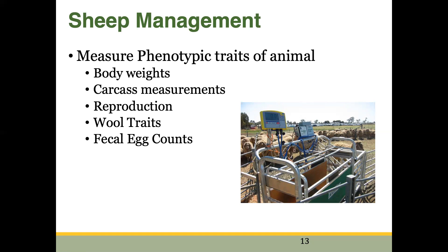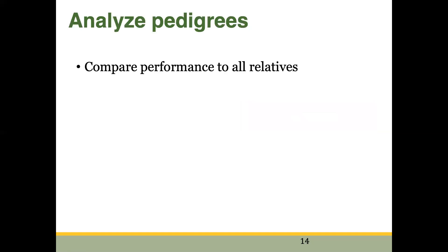It's a fairly simple process on-farm — we're simply measuring certain phenotypic traits and that information is then submitted to NSIP for analysis, and this is where the statistical power of NSIP comes into play. These animals are all raised on their respective farms or ranches and we assume that the majority of animals within a production operation are going to be managed in a similar way — you're going to be raising the majority of your lambs as one contemporary group or one management group.